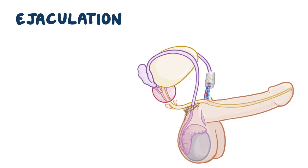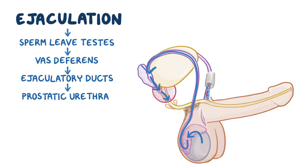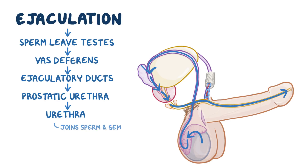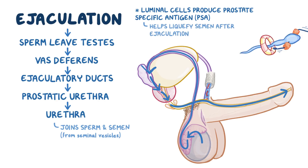During an ejaculation, sperm leave the testes, travel through the vas deferens into the ejaculatory ducts, and travel through the prostatic urethra. Smooth muscles in the prostate contract and push the prostatic fluid into the urethra where it joins the sperm as well as the semen, which is the fluid that comes from the seminal vesicles. The luminal cells also produce prostate-specific antigen, or PSA, which helps to liquefy the gel-like semen after ejaculation, thereby freeing the sperm to swim.